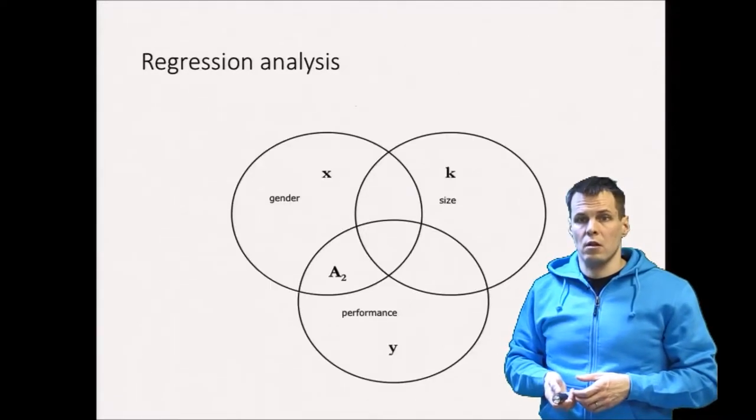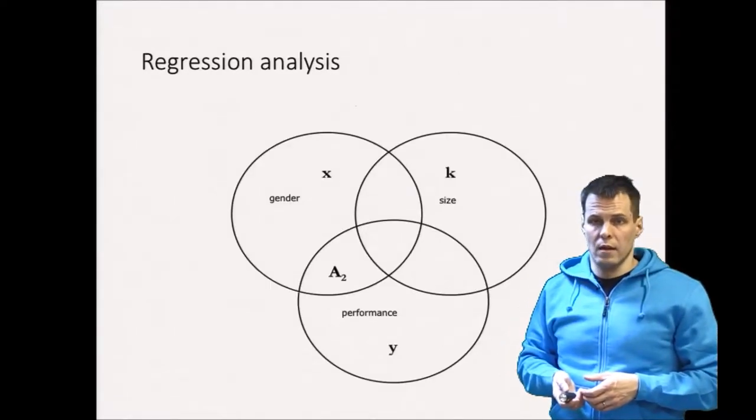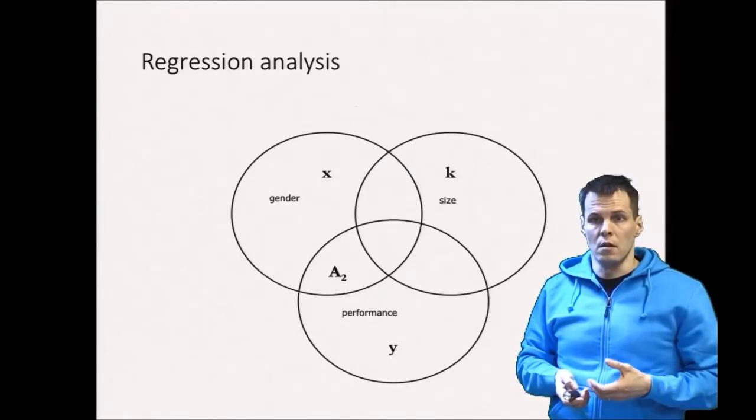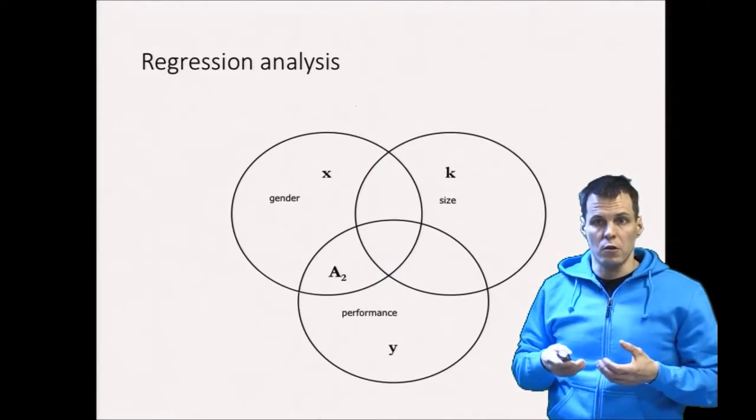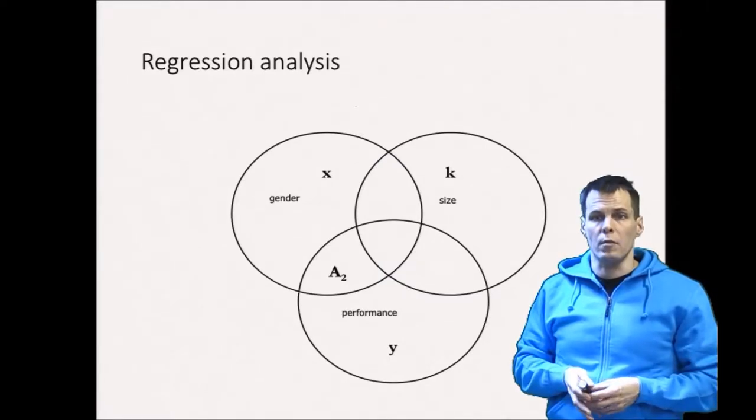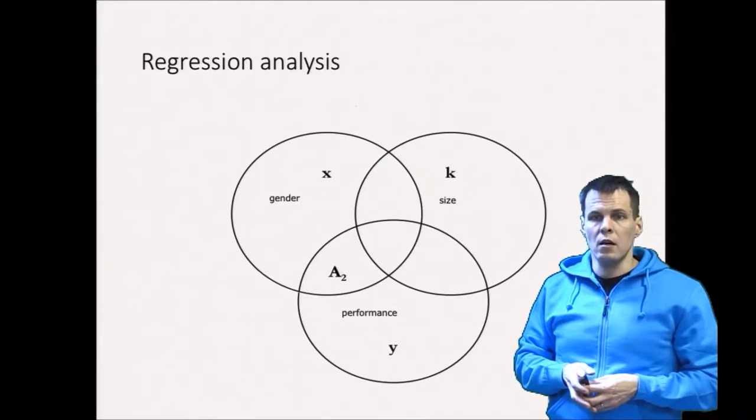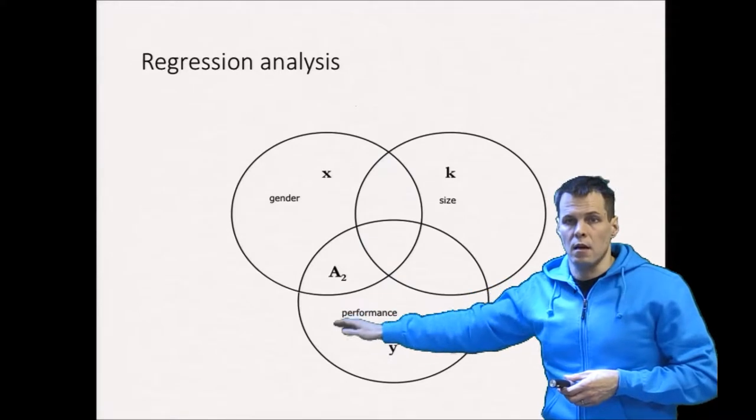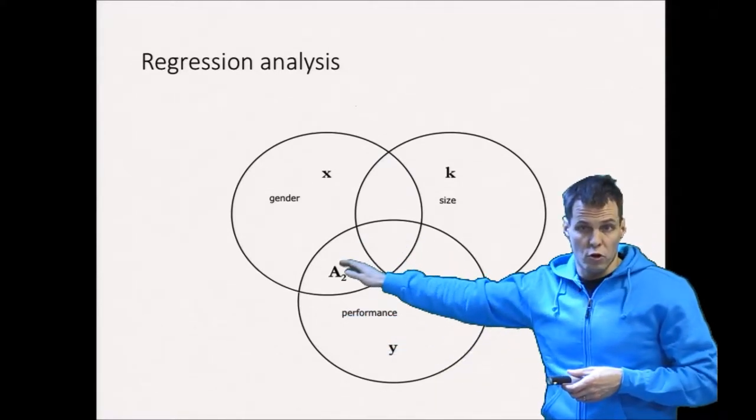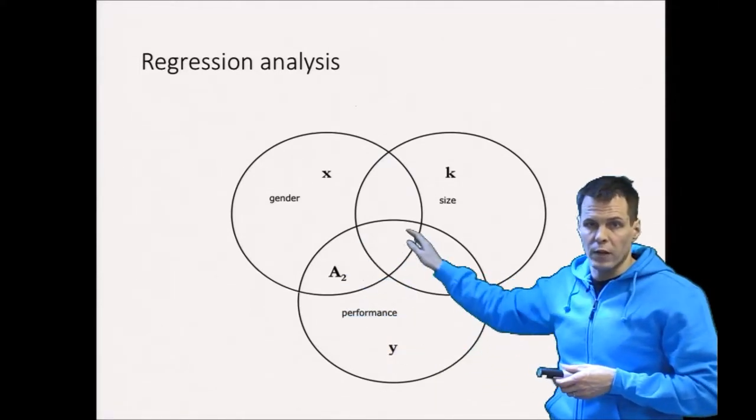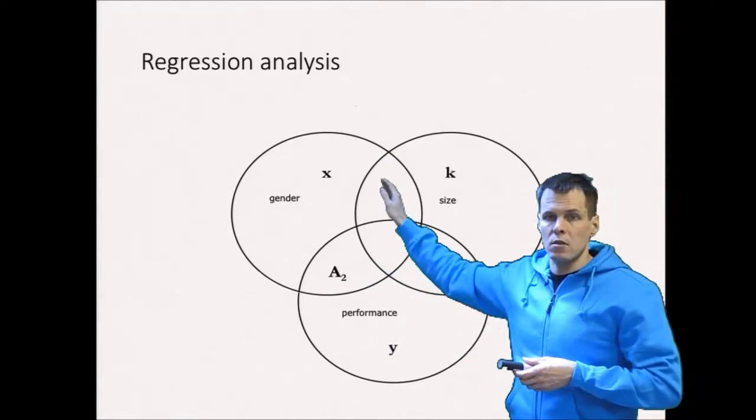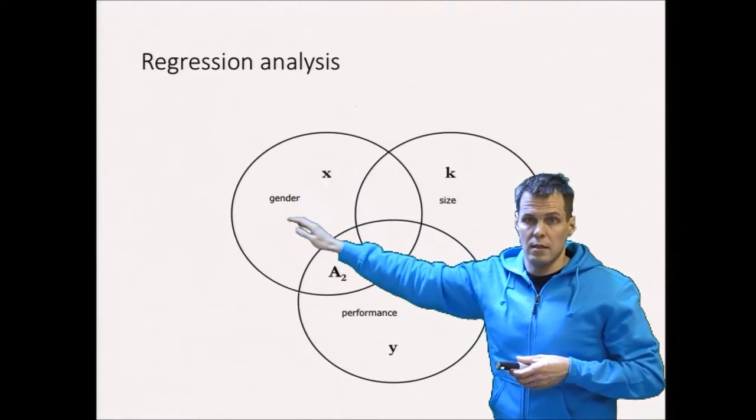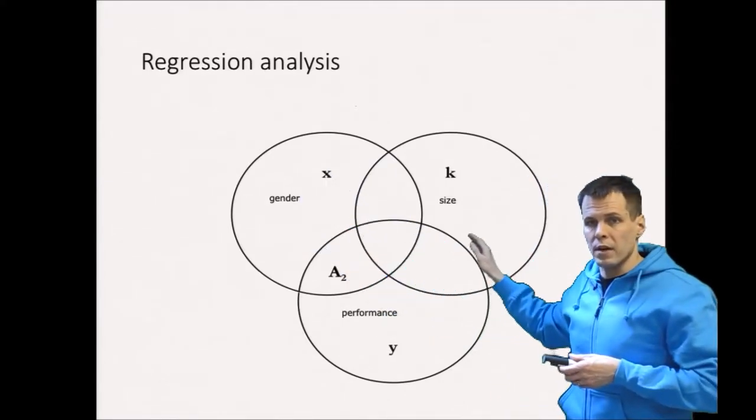The idea of regression analysis is commonly presented as a Venn diagram. This Venn diagram is useful for illustrating some properties of regression analysis but it doesn't illustrate all the properties, but it's a good starting point nevertheless. The idea of these circles here is that this circle presents the variation of company performance or return on assets. So this is the variation of the dependent variable, this is the variation of the independent variable that we're interested in which in this case is the CEO gender, and this is the variation in company size.